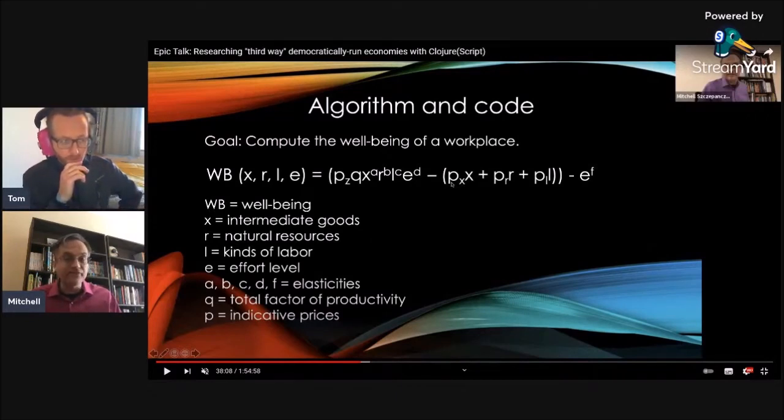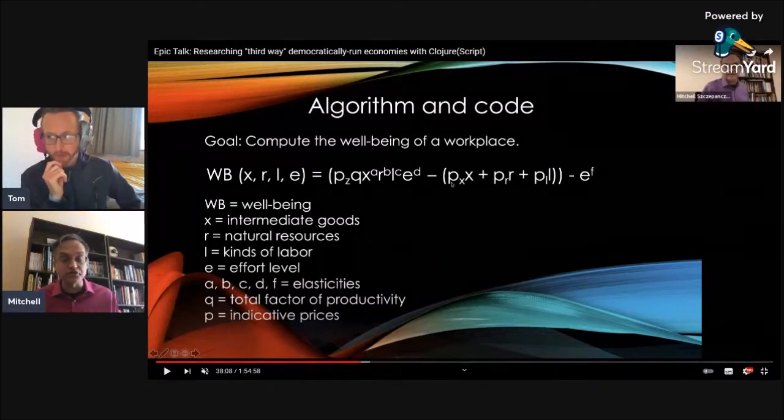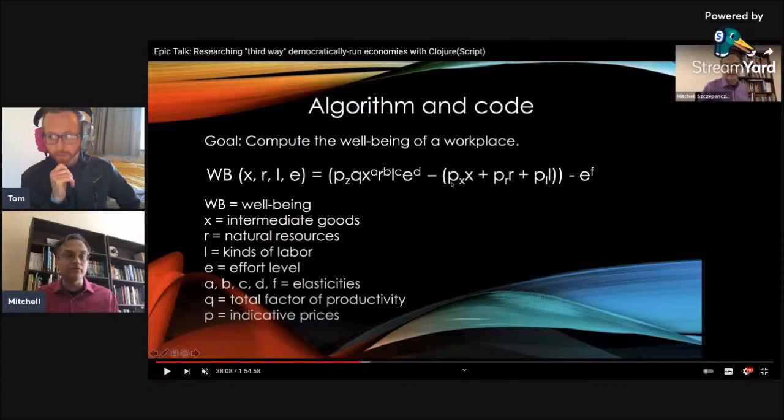Yes and no. If we, you'll notice that within the parameter of the, within the formula and each of the components that you raise, while yes, there are matrices there, for example, for natural resources, there is also the added in matrix P, which is the indicative prices. You're talking about externalities, externalities within a capitalist economy by that very name are ignored.